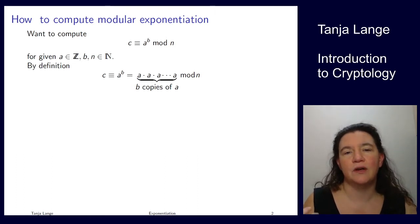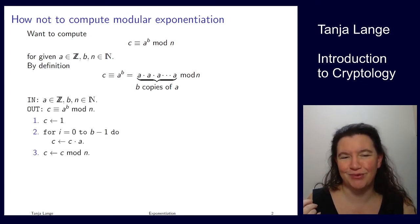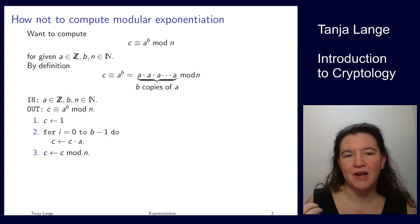So that would give a way to compute this, which is more like how not to compute modulo exponentiation. So we could be running through a loop b times, initializing at one, and then each time multiplying by a. And at the very end we reduce modulo n. Now I've been highlighting already how bad this is, so that's kind of obviously not what we should be doing.